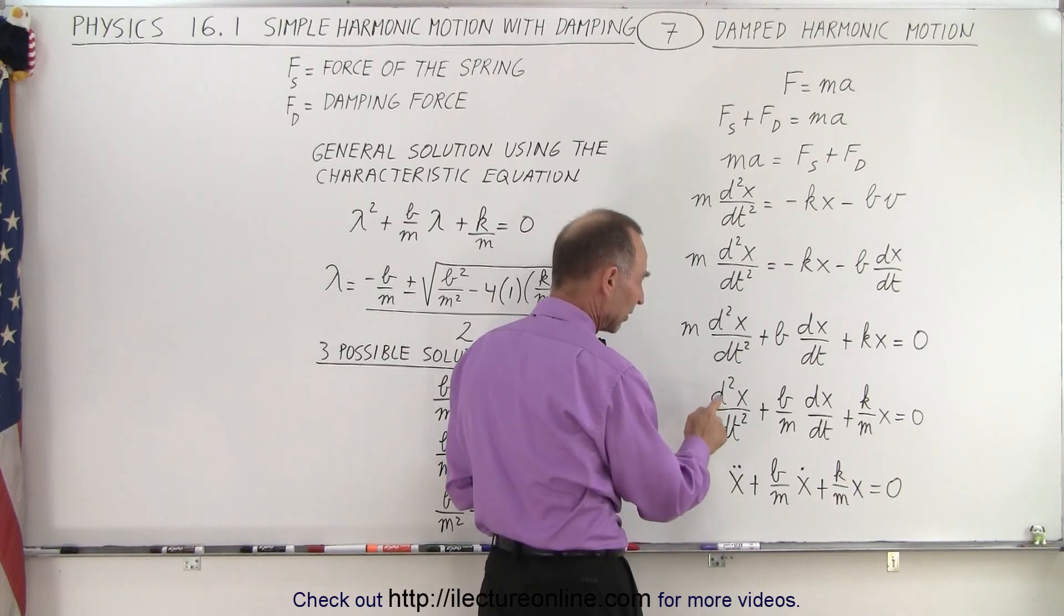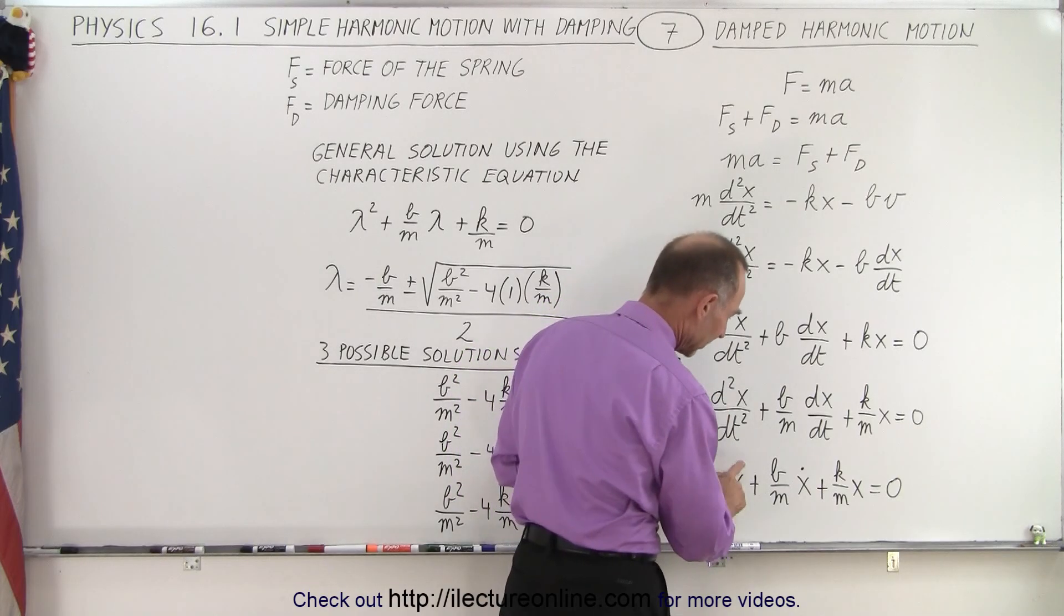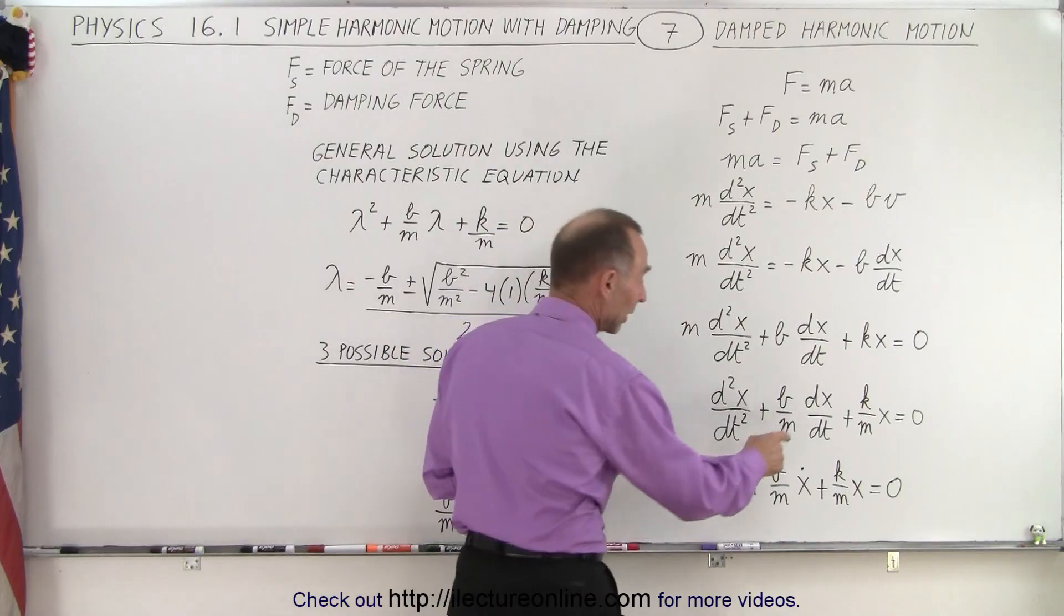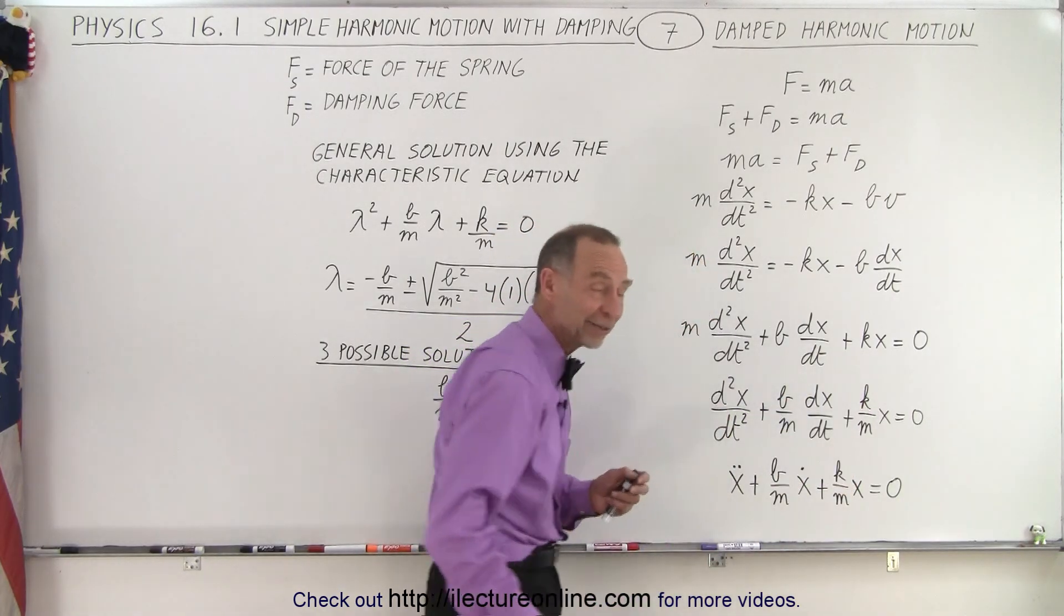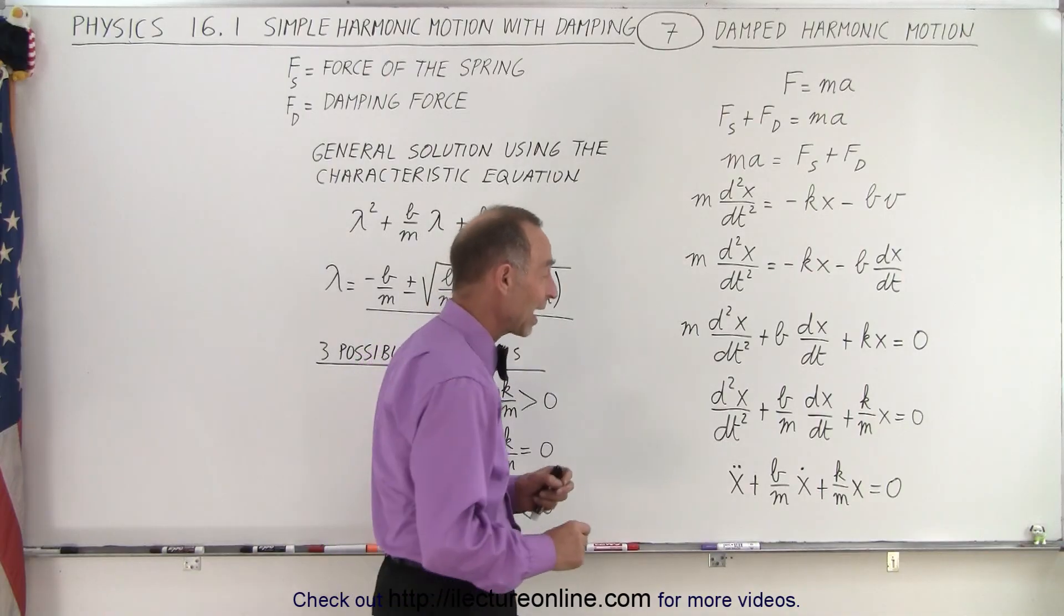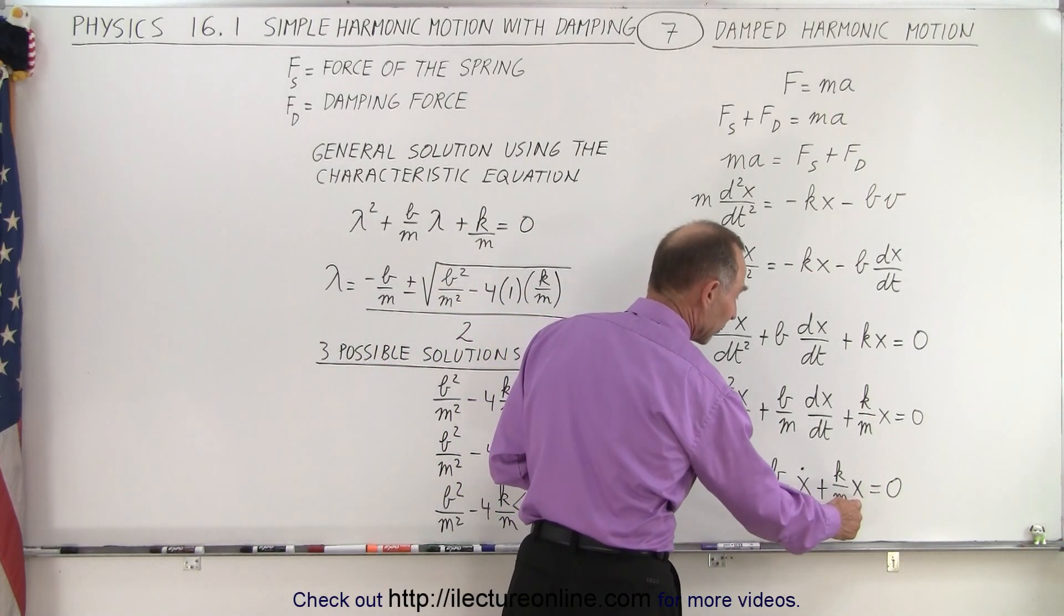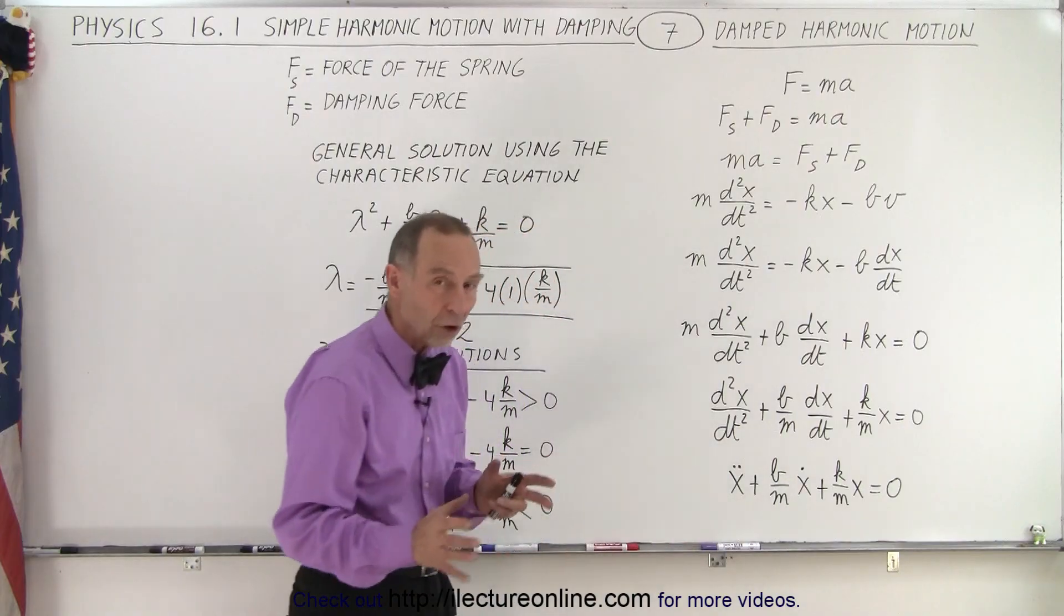And then notice instead of writing the second derivative of x with respect to time, we write it as x double dot. Instead of writing dx dt, we write x dot. Instead of x, well, we still write x. So notice we have a coefficient in front of x dot, coefficient in front of x. And then we can solve that.